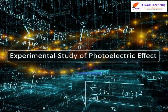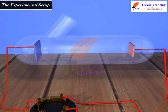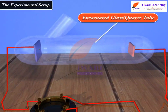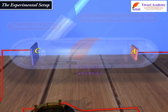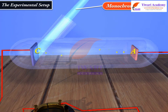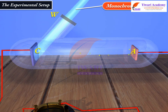Experimental study of the photoelectric effect. The experimental setup consists of an evacuated glass quartz tube containing a photosensitive plate C (emitter) and another metal plate A (collector). Monochromatic light of sufficiently short wavelength from the source S is allowed to pass through the window W. A transparent quartz window is sealed onto the glass tube, which allows ultraviolet radiation to pass through it and irradiate the photosensitive plate C.